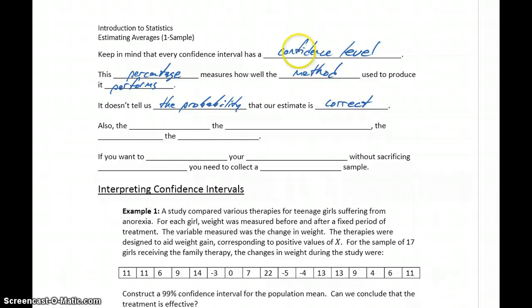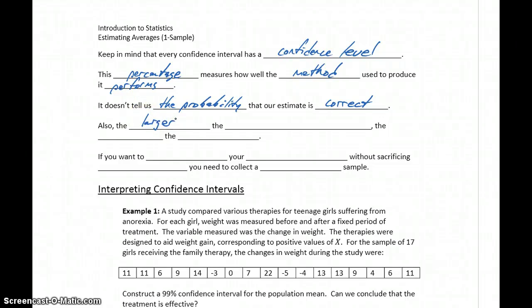All the confidence level tells us is that if we could repeat this experiment over and over again, it represents the percentage of times our confidence interval would in fact capture that population parameter. Since we're only getting one of those intervals, it could be that our particular confidence interval does capture the population parameter or fails — and we just don't know. We also want to keep in mind that the larger the confidence level, the wider the confidence interval.